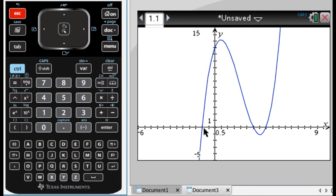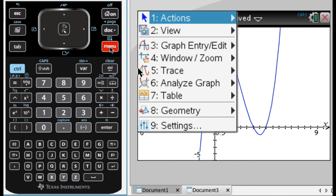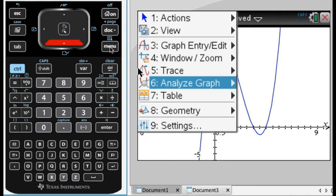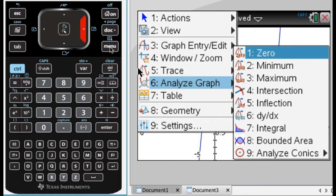So we have that. The next thing I want to do is find an x-intercept, which the calculator calls a zero, and eventually you will also call it a zero, maybe you do already. So I'm going to press menu, and go to option six for analyze graph, and option one is zero.